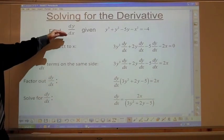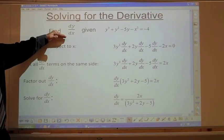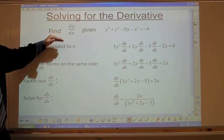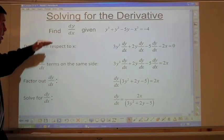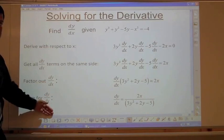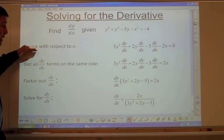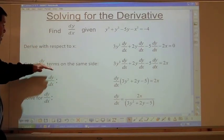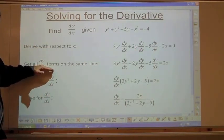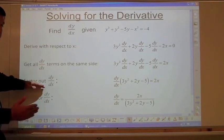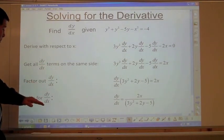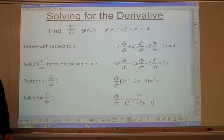When finding dy/dx using implicit differentiation, these are always the steps: derive with respect to x, get all the dy/dx terms on one side, factor out dy/dx, and solve for dy/dx.